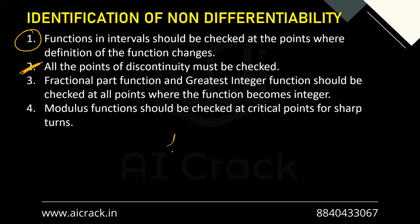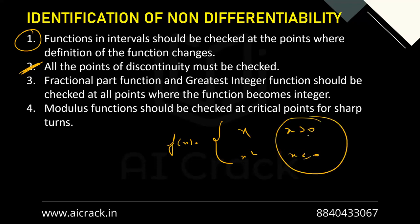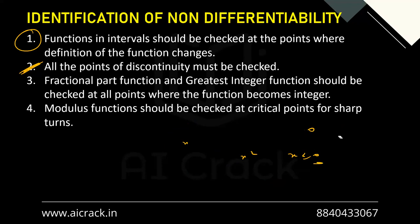For example, if we have F(x) = x for x > 0 and x² for x ≤ 0, the definition changes at x = 0. So we check at zero whether the function is continuous, and similarly whether it is differentiable at zero.